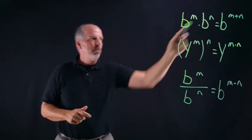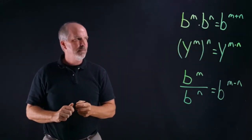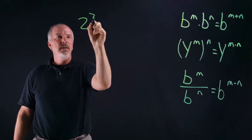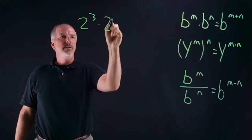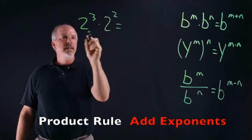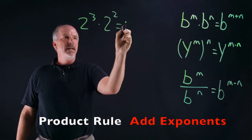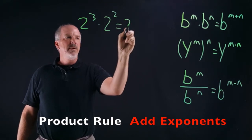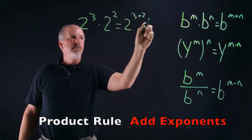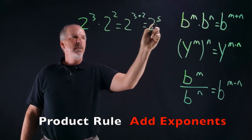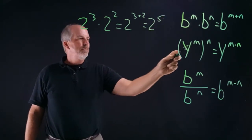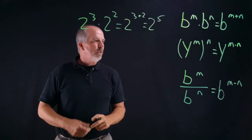We're adding the exponents. So let's do one: two to the third times two to the second. We have the same base, so we're going to add the exponents — two to the three plus two equals two to the fifth.